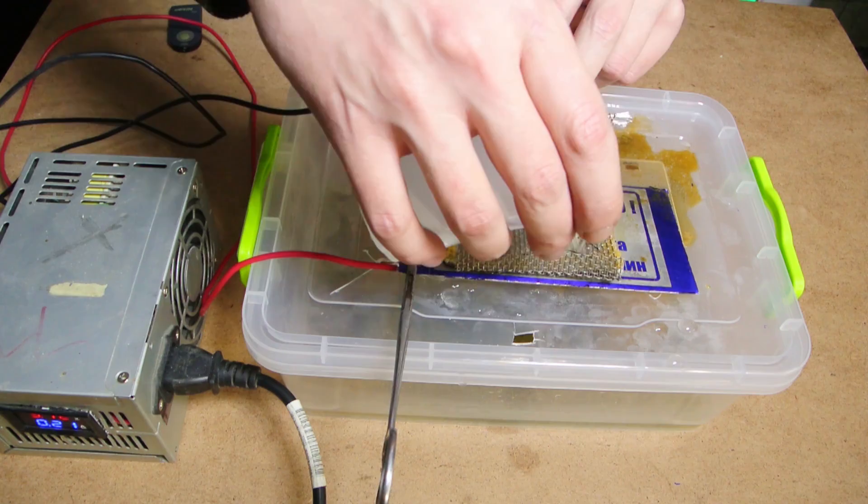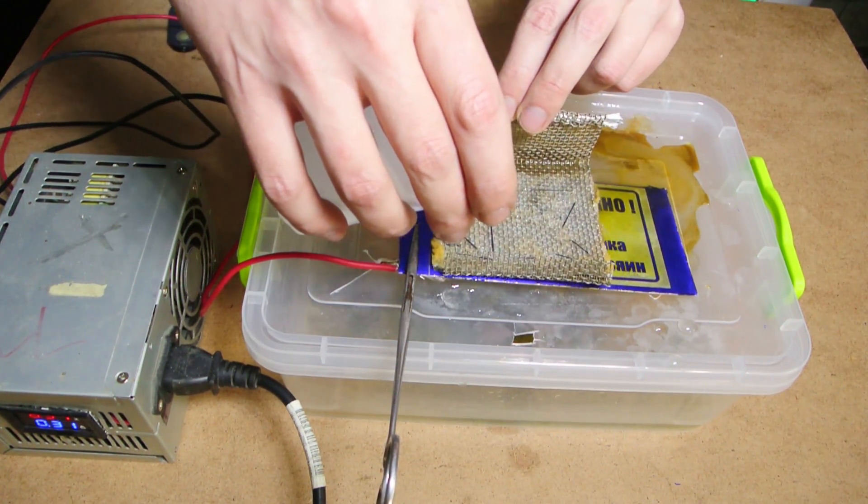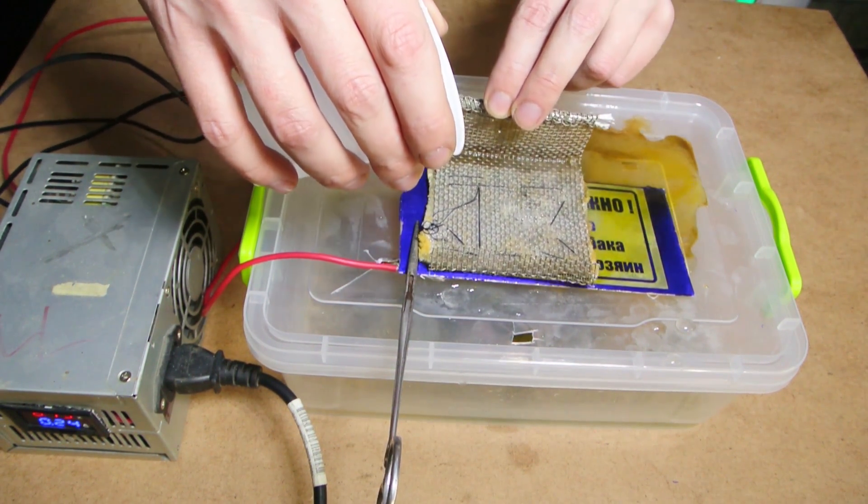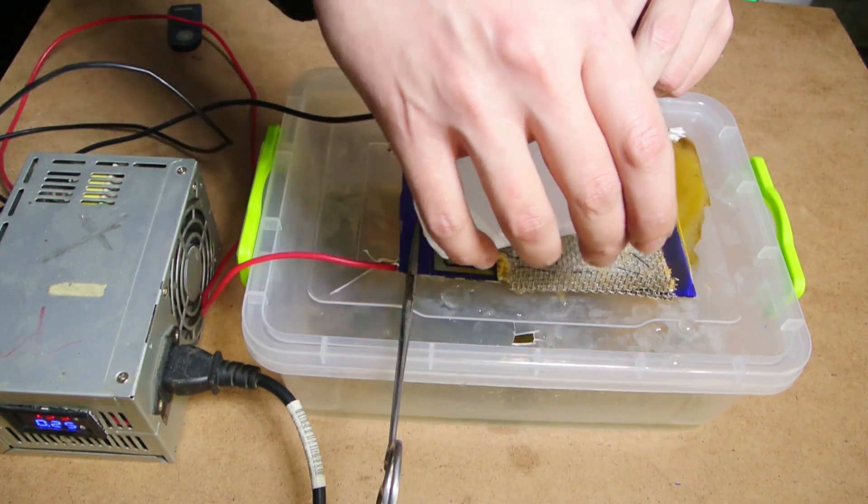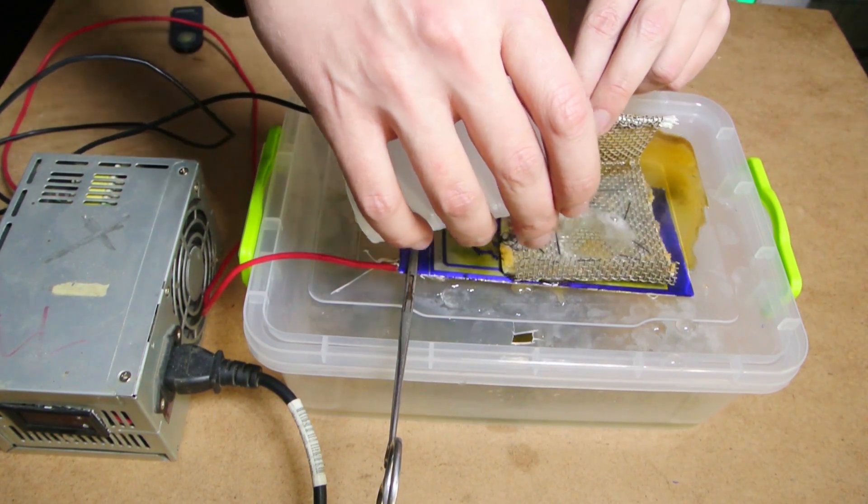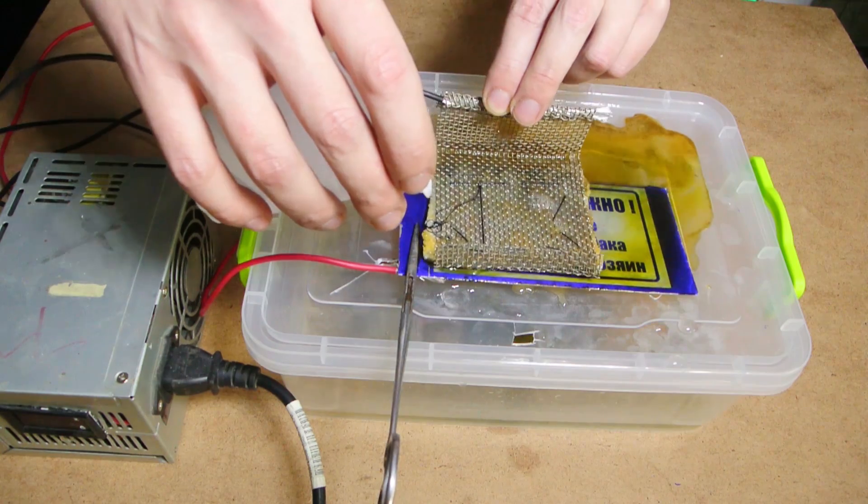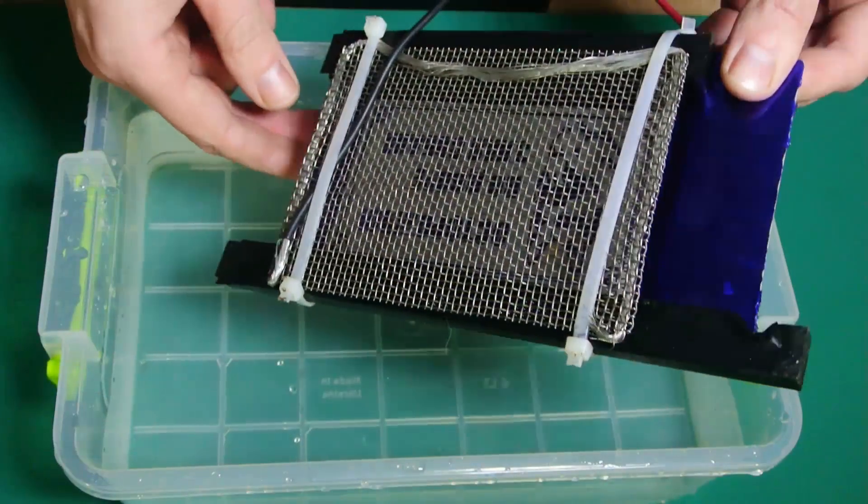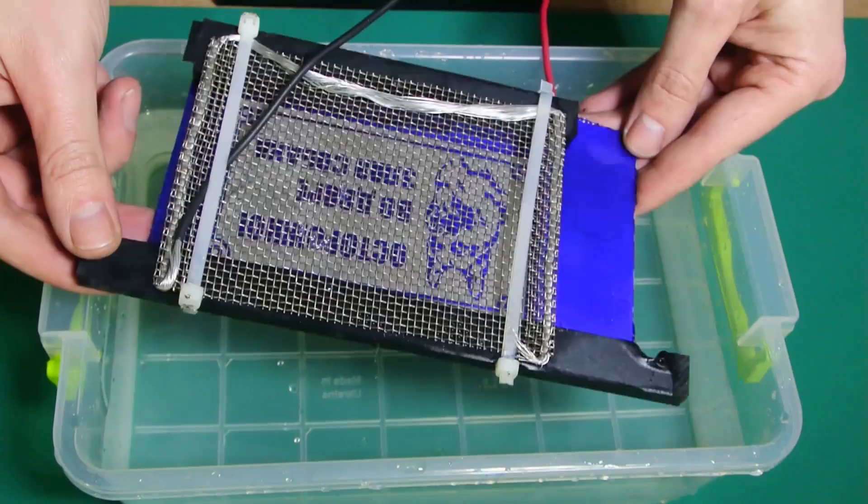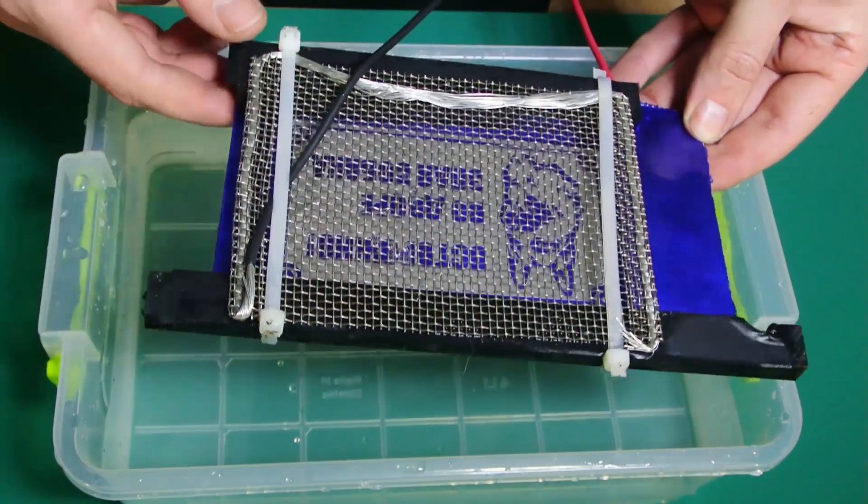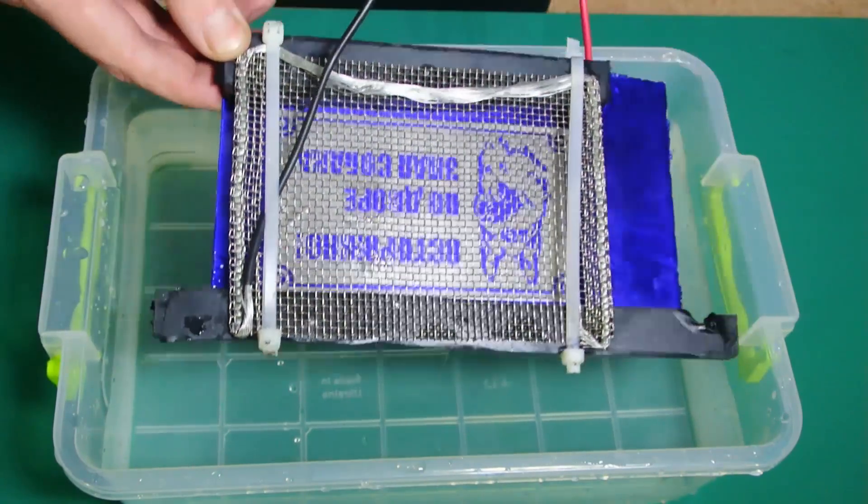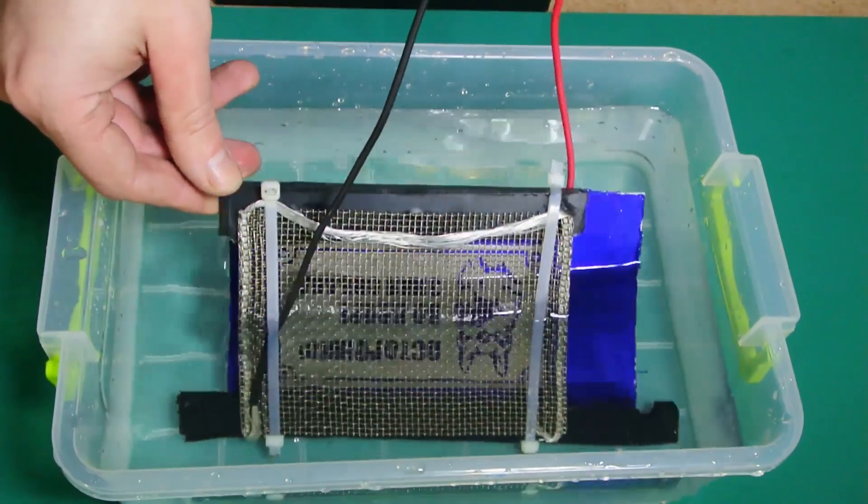Now, moistening the sponge with a solution of water and table salt, about a tablespoon per liter of water, you need to move the cathode along the part. I don't really like this method, so I've fixed the cathode in the form of a grid on the part, insulating them with a piece of plastic and placing the structure in a salt solution for 5 minutes.